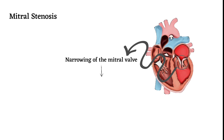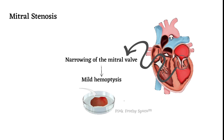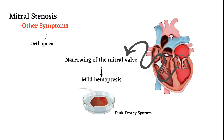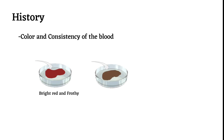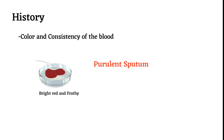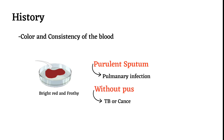Heart failure can lead to very mild hemoptysis, which presents as pink frothy sputum with mild traces of blood. Other symptoms associated with it include orthopnea and paroxysmal nocturnal dyspnea. Regarding history-taking, the first consideration is the color and consistency of the blood, which is usually bright red and frothy. This is different from hematemesis, which usually shows brown or black blood. If purulent sputum is mixed with blood, an underlying pulmonary infection is more likely; if without pus, this is probably tuberculosis or cancer.